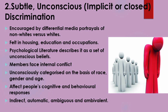These subtle forms of racism are indirect, automatic, ambiguous, and ambivalent. They include negative stereotype associations and discriminatory behavioral impulses. Categorization by race can activate stereotypes and lead to subtle forms of discriminatory behaviors. All of these constitute barriers to full equality of treatment.